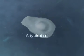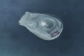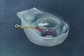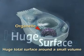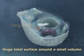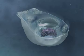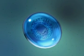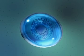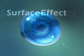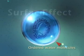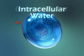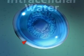Let's take a close-up view of a typical cell. If we zoom in further into the organelles inside, we see that each organelle has a huge total surface relative to its volume. This is a key property of the organelle and of the cell itself. The huge surface creates an effect known as the surface effect, and in turn organizes the water molecules surrounding the organelles. The result? Intracellular water with its unique life-giving properties.